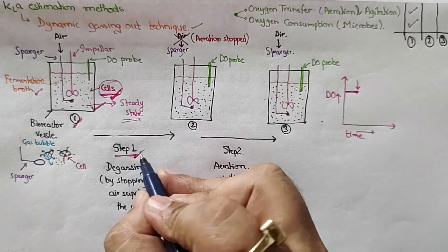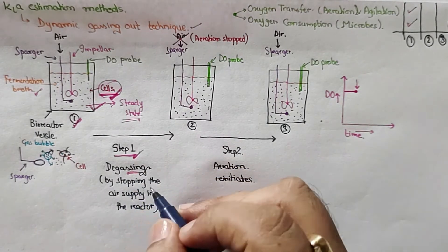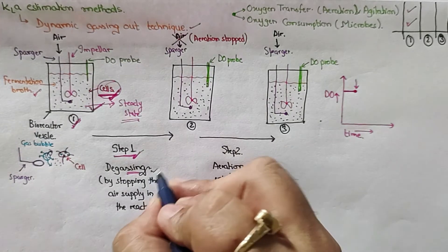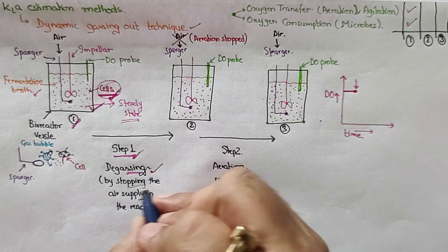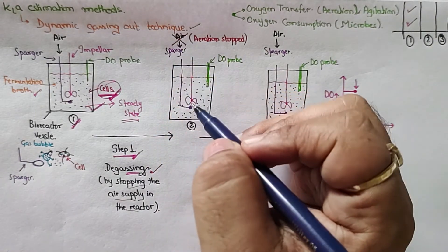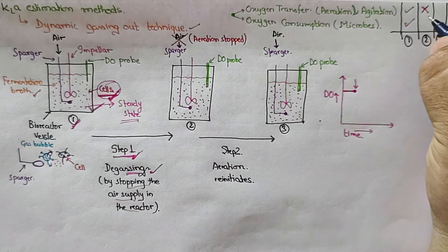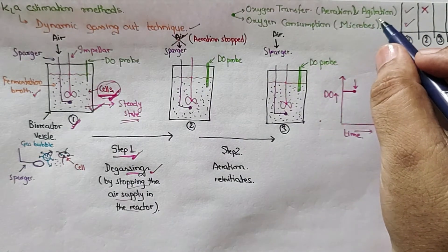Now we enter into step number one. In step number one we start the degassing process, and this degassing is done by stopping the air supply to the reactor. So we just cut off the air supply. Now we do not have any oxygen transfer occurring.